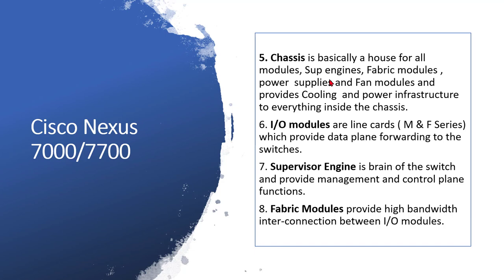Input/output modules are used for connecting servers or other switches, whether at the core layer or aggregation level — they handle data plane forwarding. There are two categories: M series and F series. The supervisor engine is the brain of the switch, handling management and control plane traffic: Layer 2 means spanning tree protocol traffic, management traffic means Telnet, SSH, SNMP; Layer 3 means routing protocol traffic — EIGRP, OSPF hello packets and LSAs. LACP traffic is also handled by the supervisor.